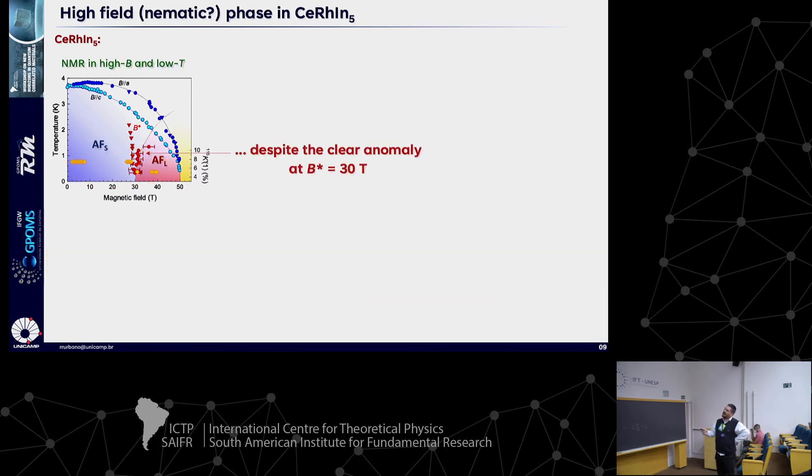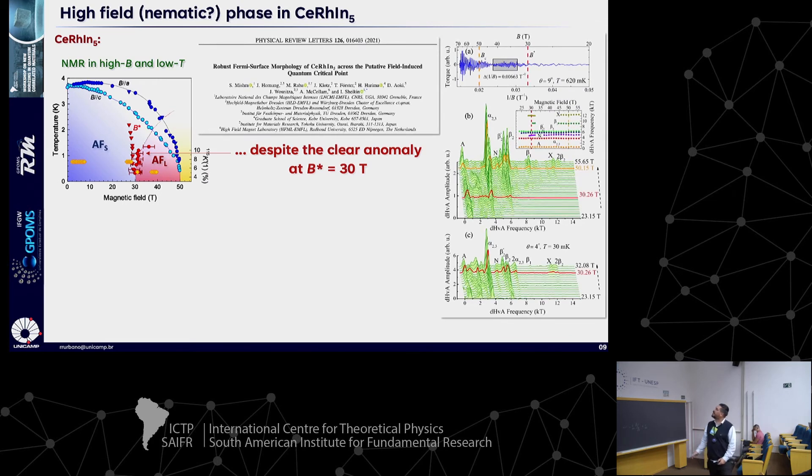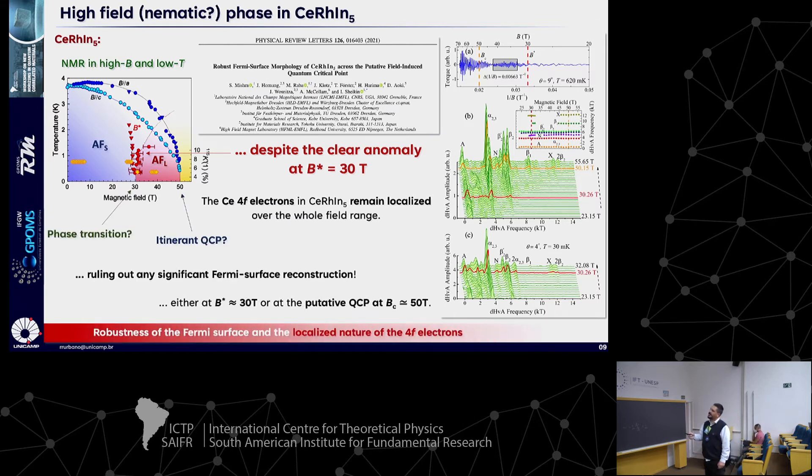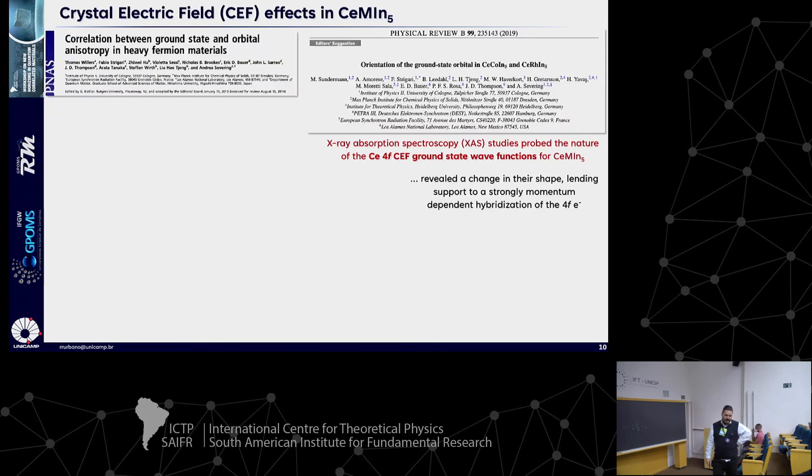Within the framework for a Kondo lattice, RKKY, crystal field, and Zeeman interaction, we claimed we saw some higher hybridization between the cerium 4F electrons and the conduction electrons, and then higher itinerance of the carriers for B over B star in this phase. We reported that data. Despite this anomaly, very recent DHVA measurements showed by the analysis of the frequency that nothing changed crossing this line. They claimed that the cerium 4F electrons actually remained localized over the whole field range and ruled out any significant Fermi surface reconstruction. Half of the community actually disagrees with that, so it's still an open question.